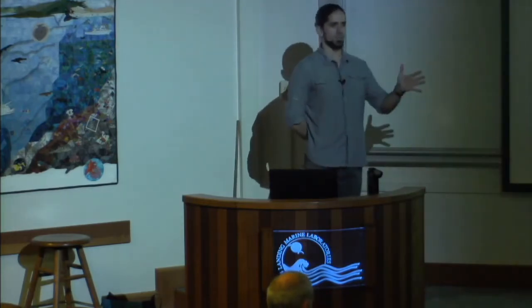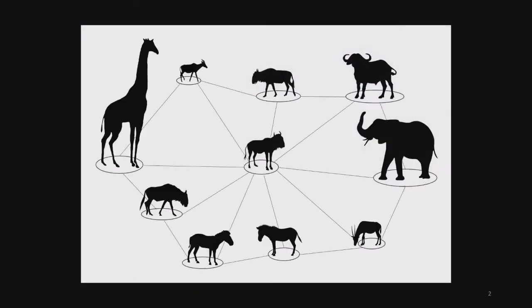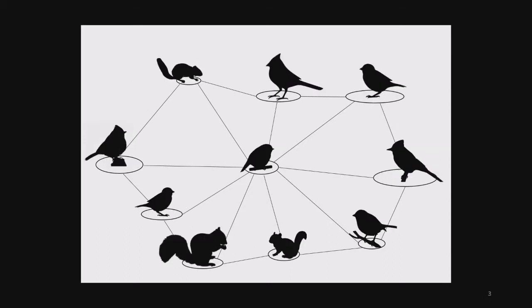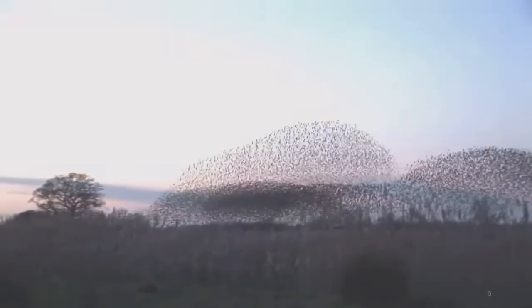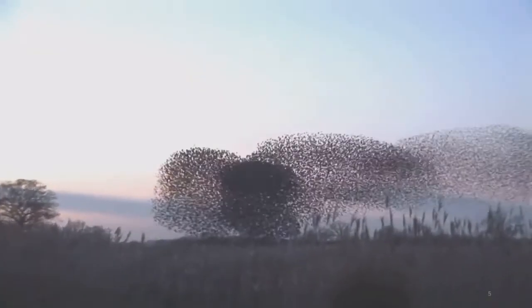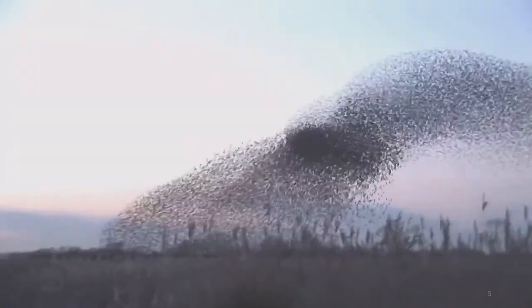Organisms in nature are linked by flows of information, and this information can arise from a variety of sources: from the postures and movements of ungulates, to intentional alarm calls by birds and mammals, to even chemical cues released by damaged plants. We know this information can have profound effects on the behavior of individuals, and it can drive striking patterns in collective behavior, like this murmuration of starlings avoiding a predator.